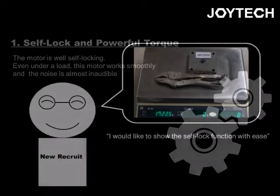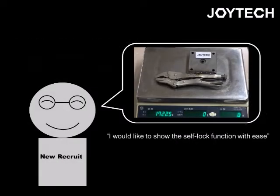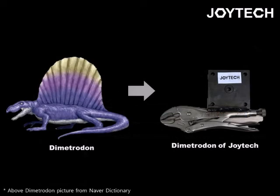One young man in our office wanted to make people understand the self-locking with ease and made a 1.8 kg stuff to experiment it. We call the stuff Dimetrodon.